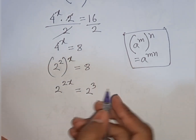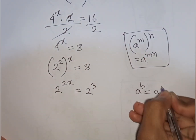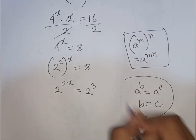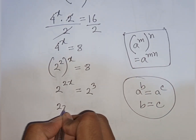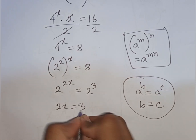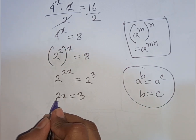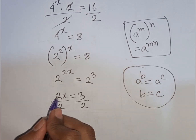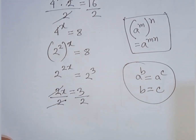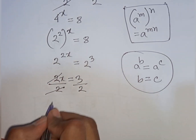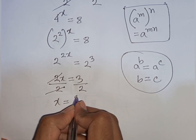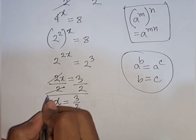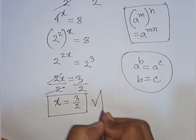Since the bases are the same, the powers must be equal: 2x = 3. Dividing both sides by 2, we get x = 3/2. This is our final answer.